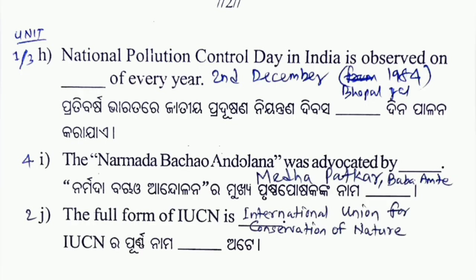The Narmada movement was advocated in Unit 4. The full form of IUCN is International Union for Conservation of Nature — Unit 2, conservation. To summarize, this sample question paper covers Unit 1, Unit 2, Unit 3, and Unit 4 — Part 1, Part 2, Part 3, and Part 4 — with 1-mark, 2-mark, 5-mark, and 8-mark questions. Discussion of all questions and answers is complete. Thank you.